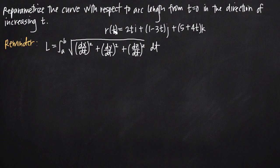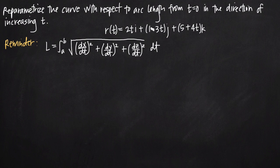Right now our vector function is defined in terms of the parameter t. We want to define it in terms of a different parameter, and we'll use the variable s as this additional parameter for arc length. The reason this is useful is because arc length doesn't change no matter which coordinate system you're operating in. So it's a kind of standard we can use, and if we parametrize the curve with respect to arc length, we'll have a function that works across coordinate systems — sometimes useful with higher-level math.